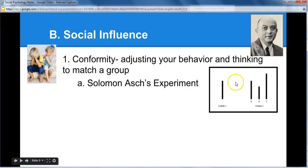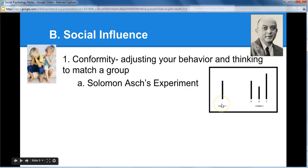He showed them a picture and said, here's exhibit one — this line. Here's exhibit two with three lines: A, B, and C. He asked which line was most similar to exhibit one. He'd go around the table asking people, and person one would say C, person two would say C, person three would say C, person four would say C. Then it gets to the fifth person, who is the one actually being tested.